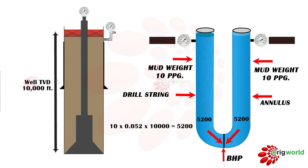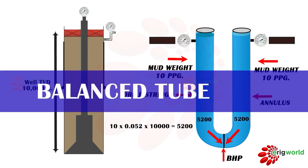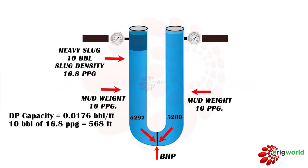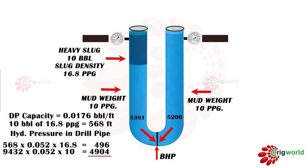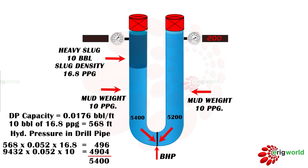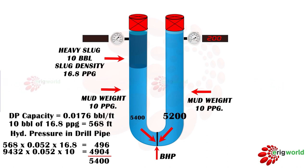Since both sides have the same mud weight, the pressure exerted will be 5200 psi — this is called a balanced tube. If 10 barrels of heavy slug with a density of 16.8 ppg is pumped into the drill pipe and the well is immediately shut by closing BOP and FOSV, the drill string side hydrostatic pressure increases due to the heavy slug, calculated as 5400 psi. The annulus side hydrostatic pressure remains unchanged at 5200 psi.